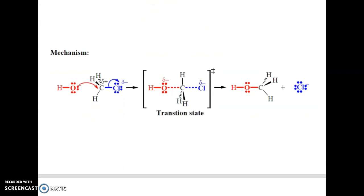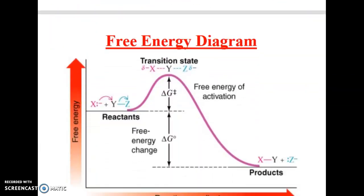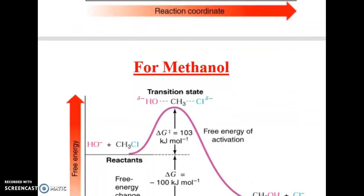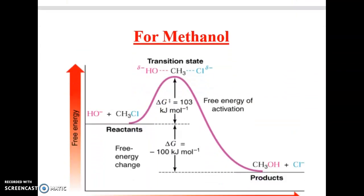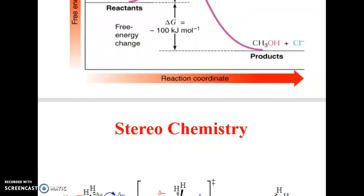You can see the mechanism: OH⁻ attacking, formation of the transition state, and formation of products. The free energy diagram shows the reactants, transition state, free energy of activation, and products. For example, CH₃Cl + OH⁻ gives methanol as the product.